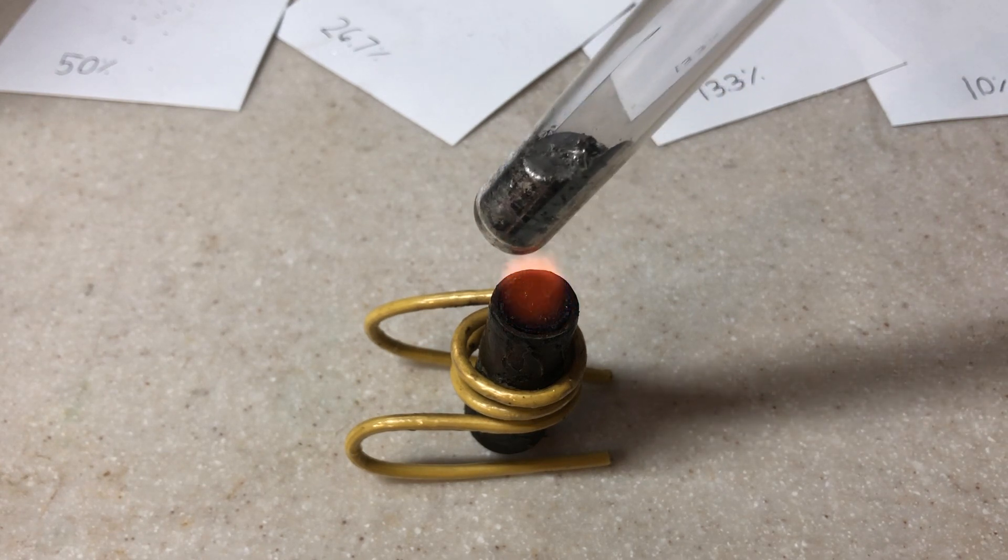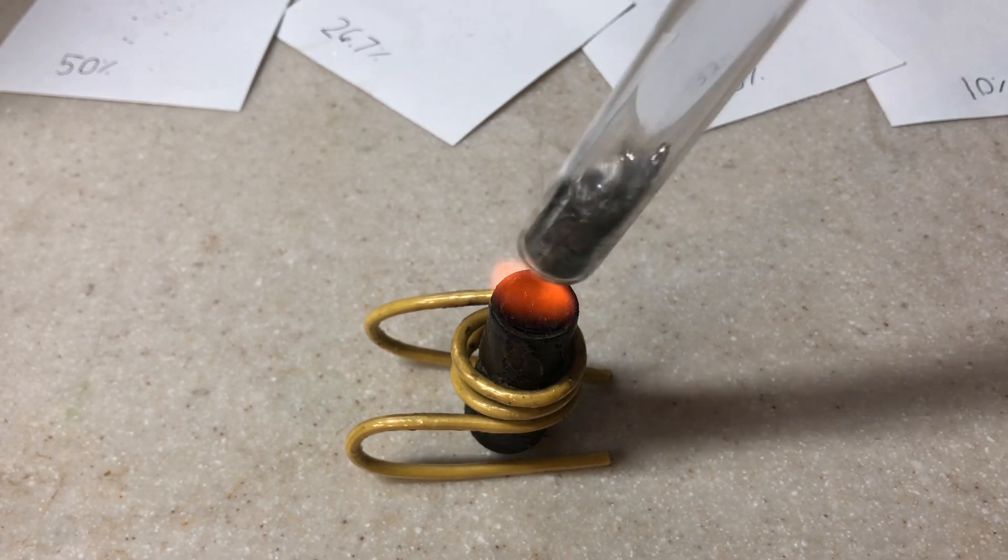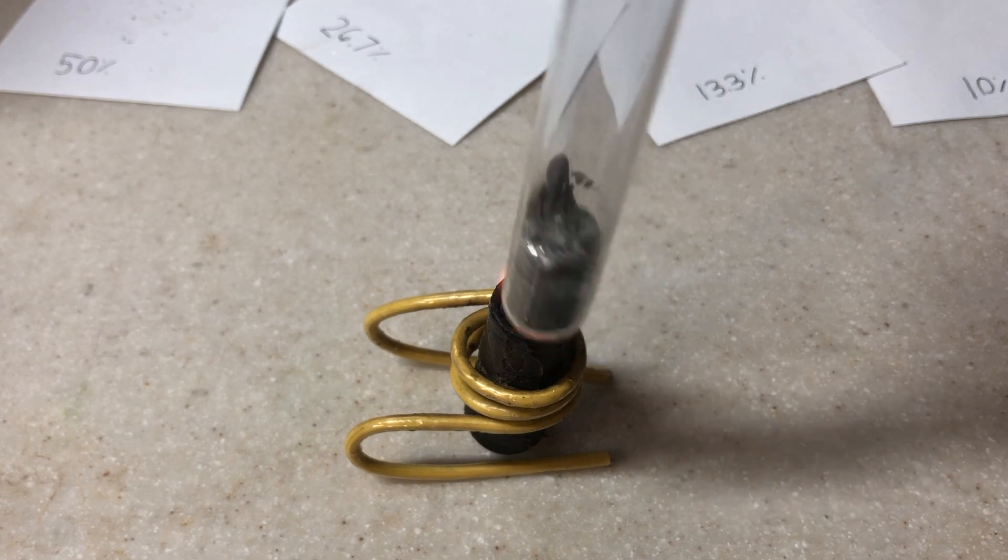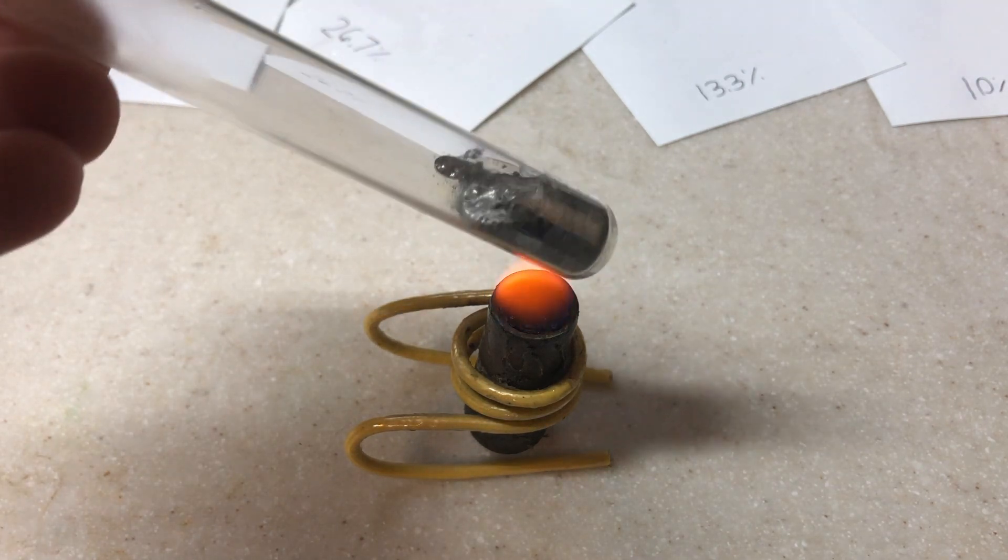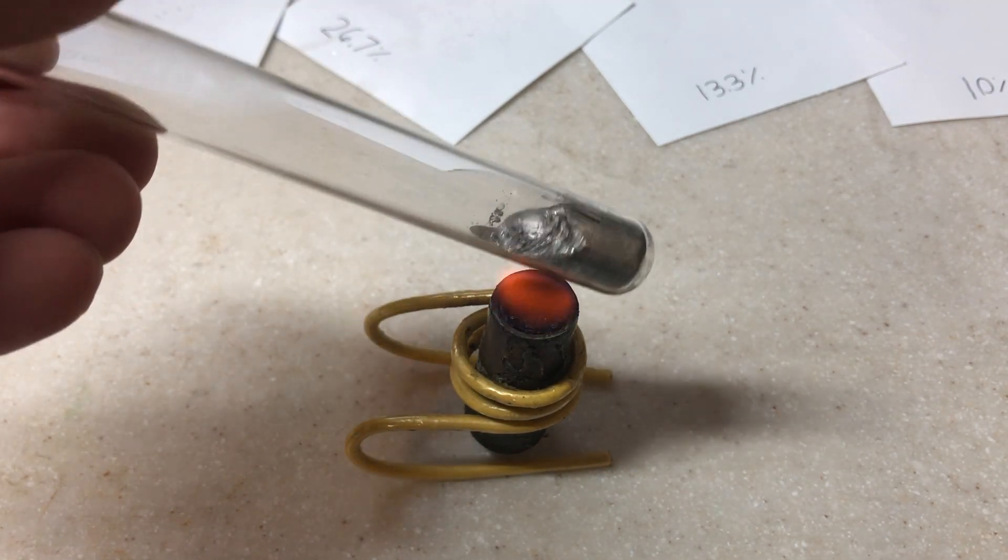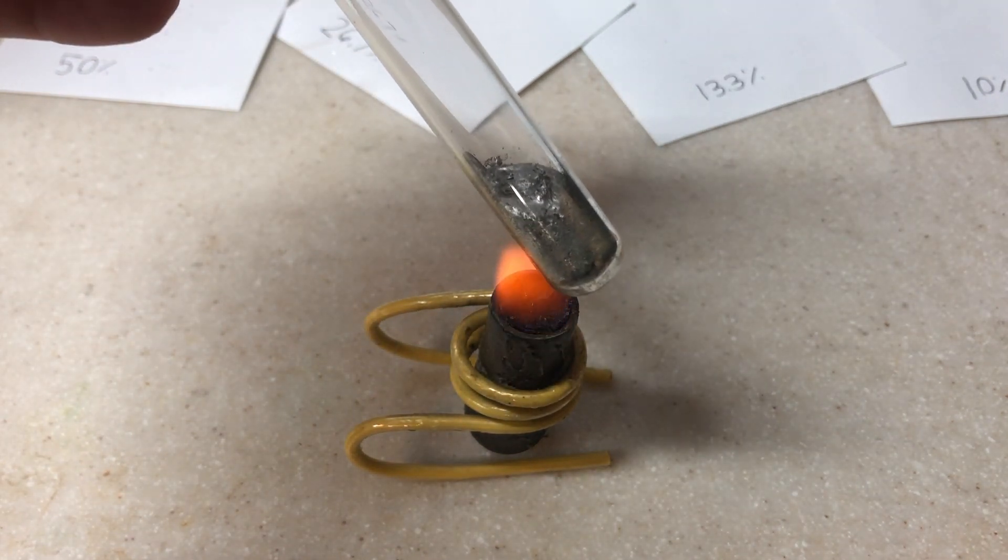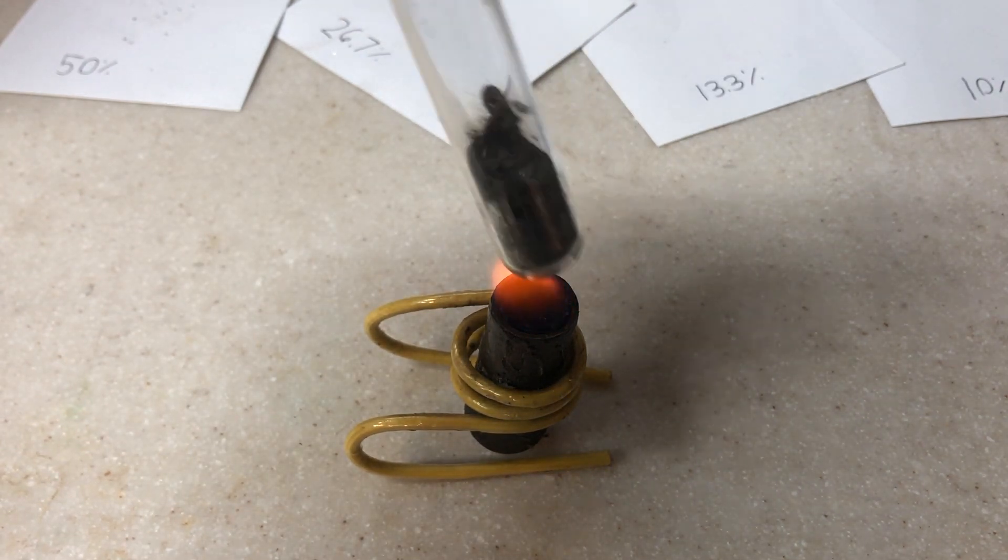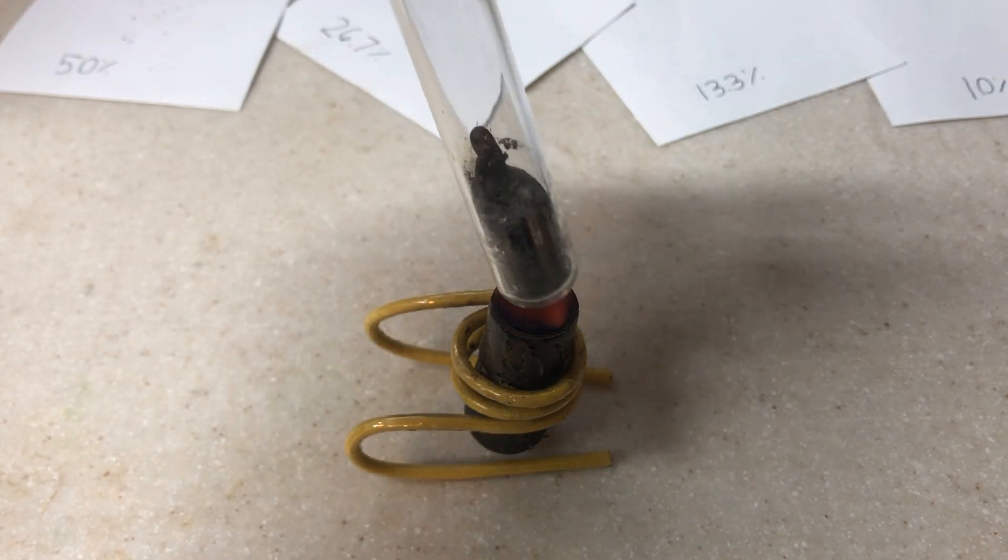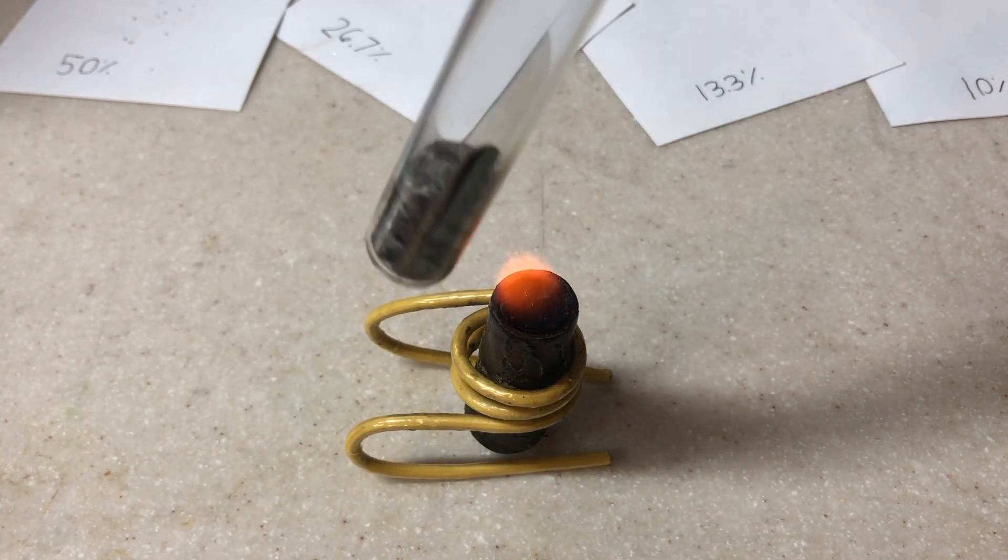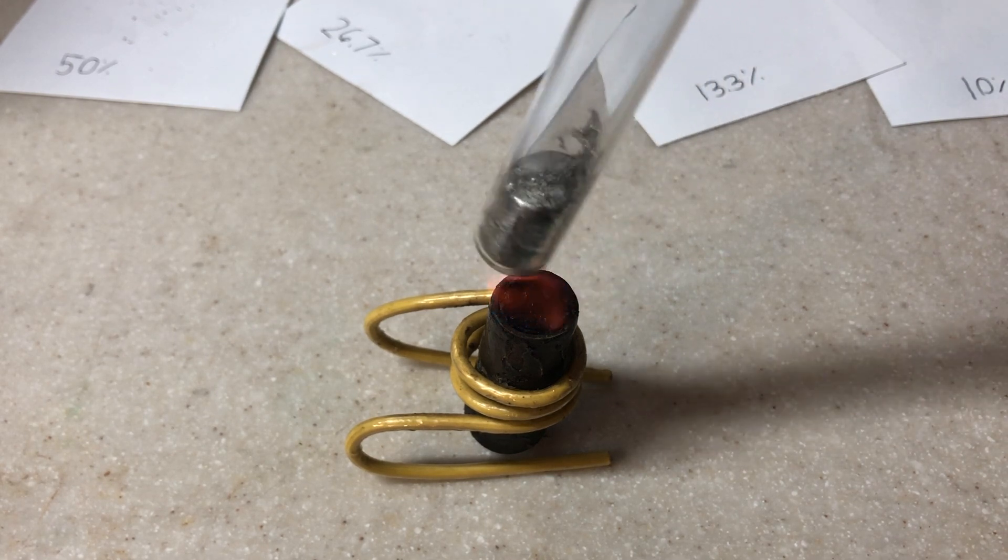It took the bismuth a while to melt because there was less surface area contacting the hot glass. And now all the metal has melted.